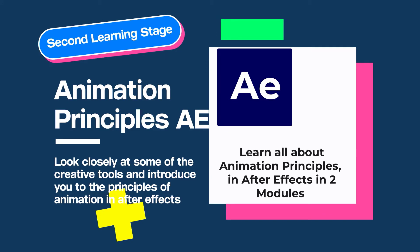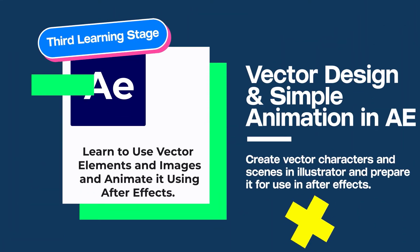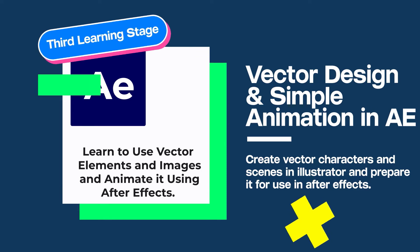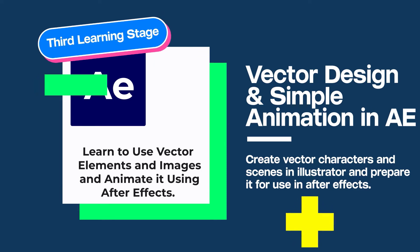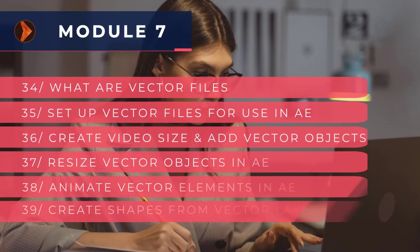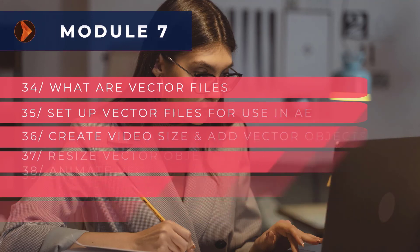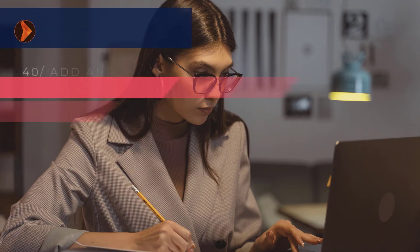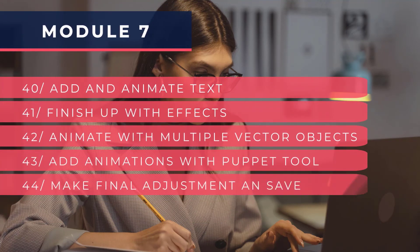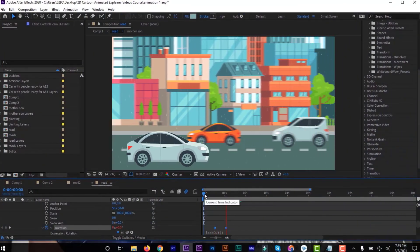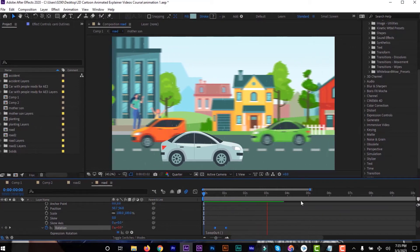Once you are familiar with the After Effects tool, the third stage is covered in module seven. Here we will start creating vector characters and scenes in Illustrator and prepare those vector files to be exported and used in After Effects. I'll show you how to apply simple to advanced animation to these prepared vector files. By the end of this section, you should be able to create a simple animated scene — a practical lesson we create together from start to finish.